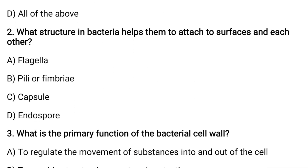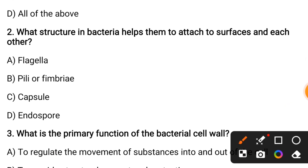What structure in bacteria helps them to attach to surfaces and each other? Which structure of the bacteria is useful for attachment to any surface? Options are: flagella, pili or fimbriae, capsule, or endospore. The correct answer is pili or fimbriae, which help bacteria to attach to or adhere to substances and surfaces.